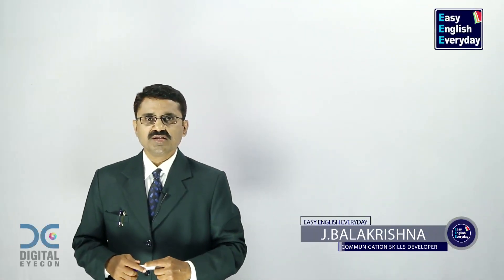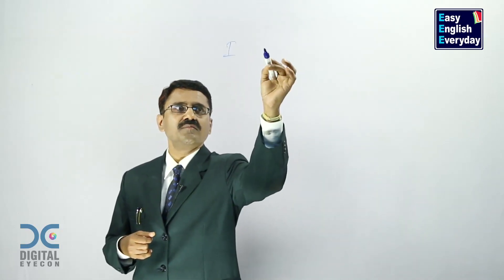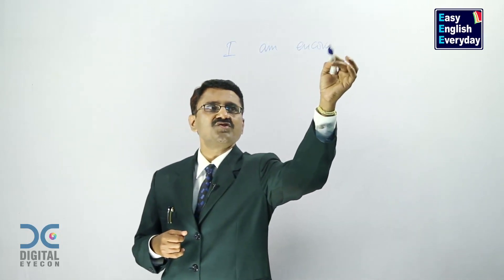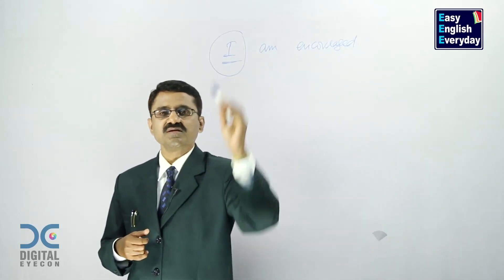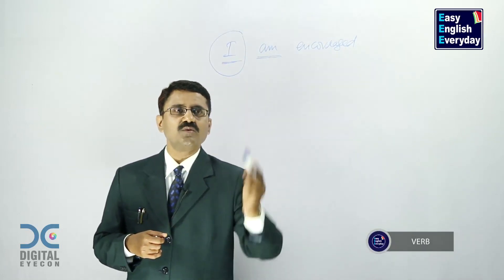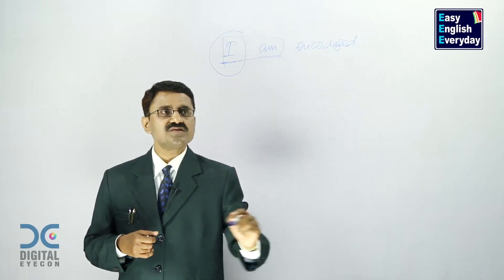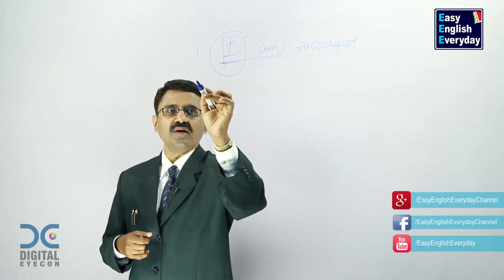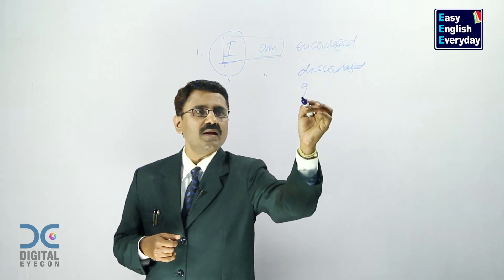Hi, this is J Balakrishna. In this video you are going to learn how actions are done to me, how something happens to me. Take this sentence: 'I am encouraged.' Here 'I' is the subject, first person singular, and 'am' is the verb in English grammar. These two come together and it goes only with 'I' and it indicates present tense.